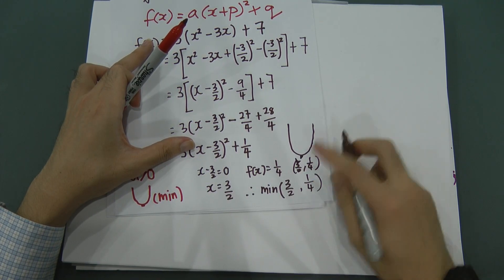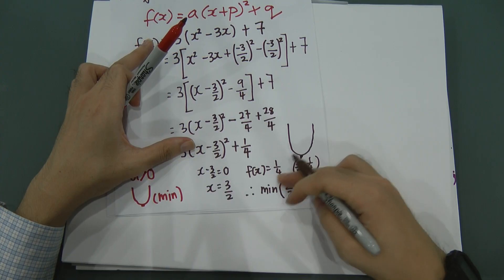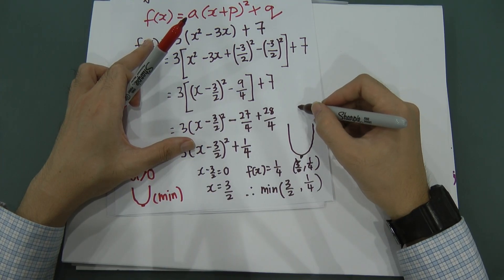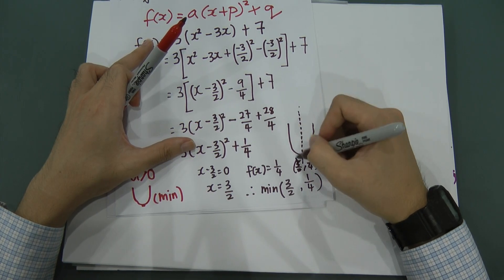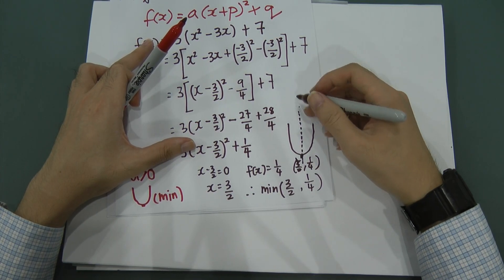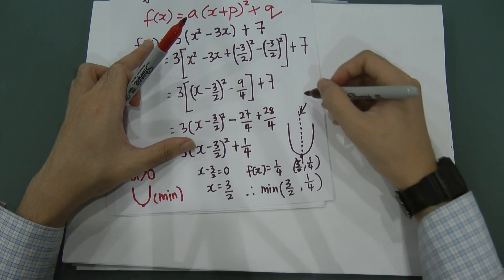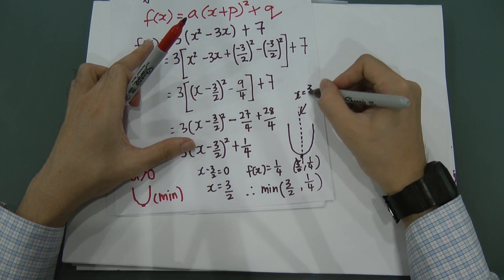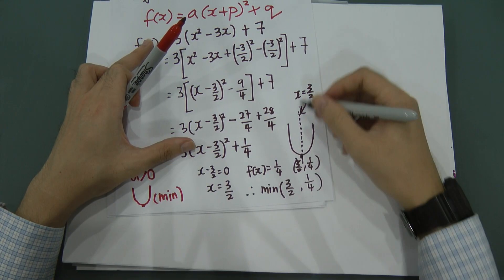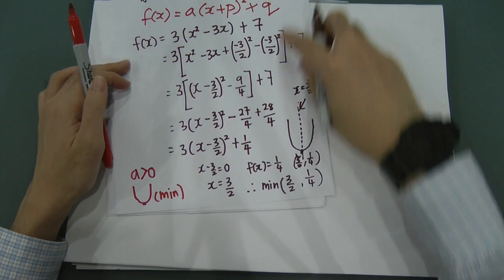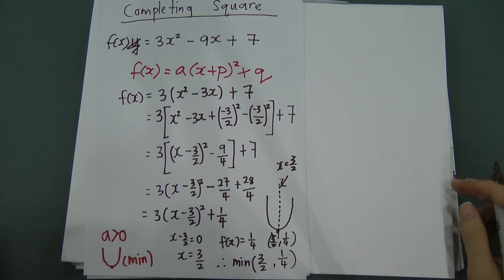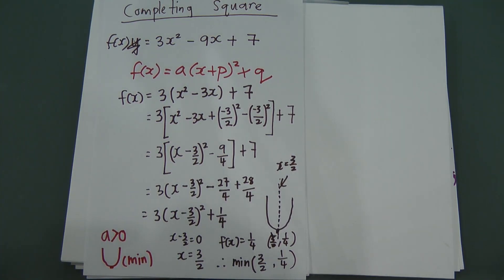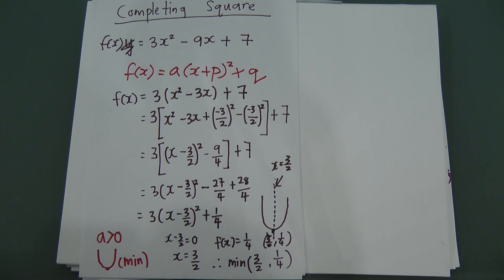Also note that x = 3/2 is the axis of symmetry for this curve — it cuts through the minimum point. So completing the square helps you find the maximum or minimum point. That's the method for completing the square. Thanks for watching.